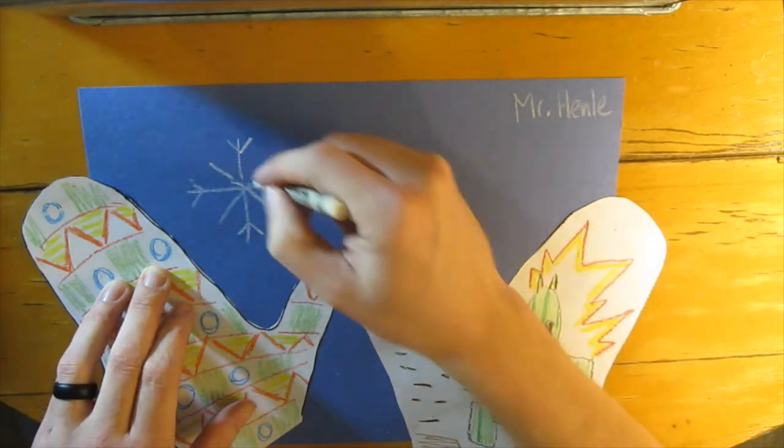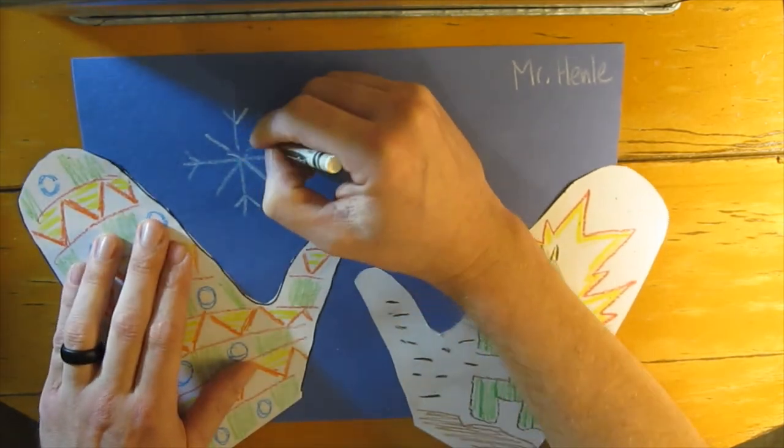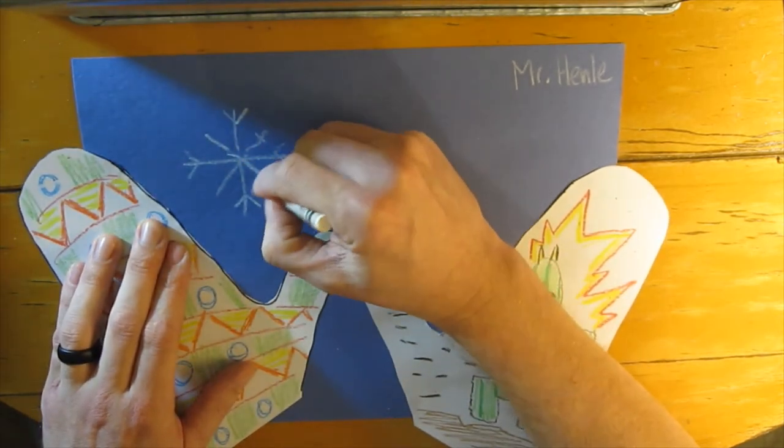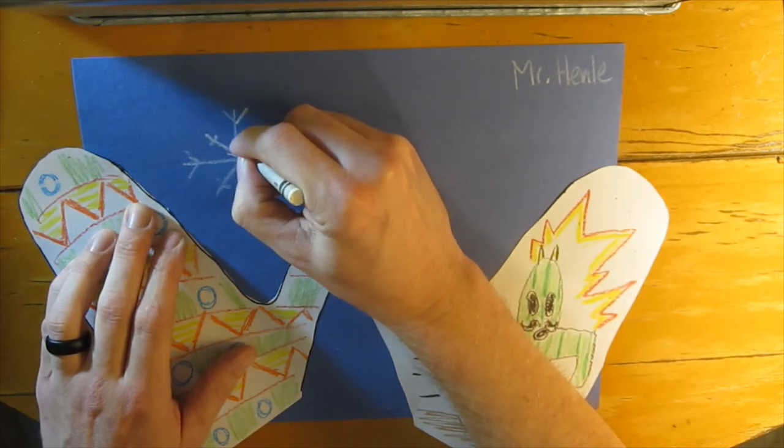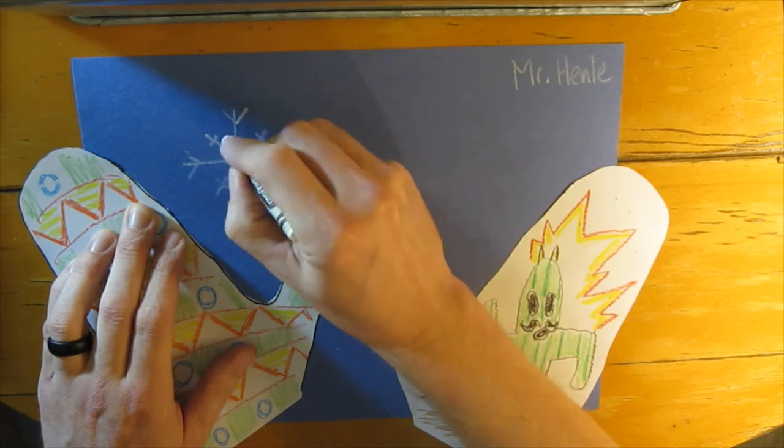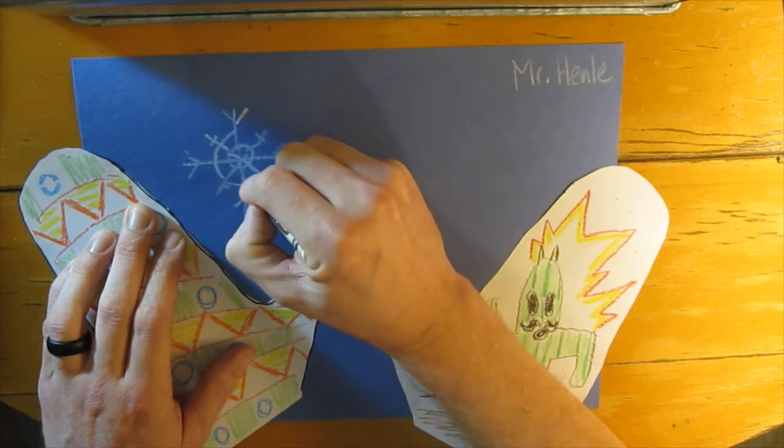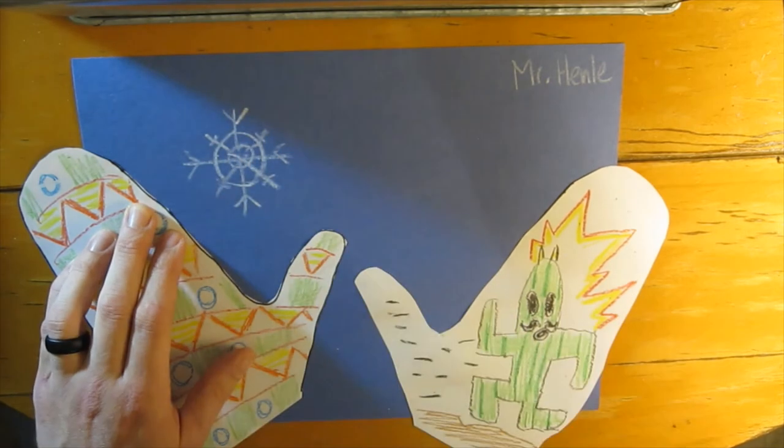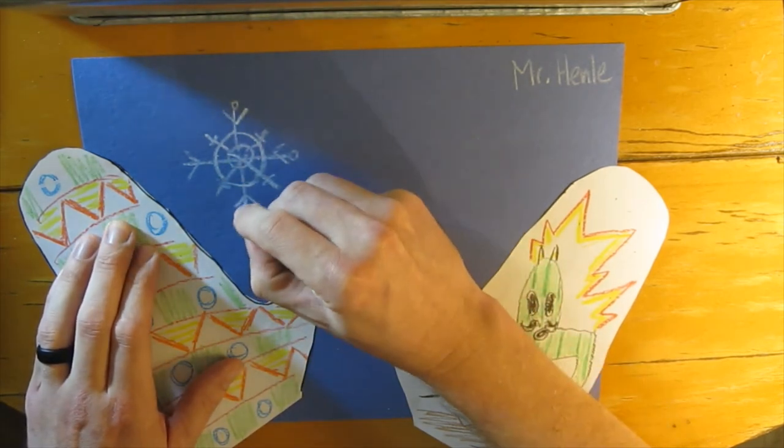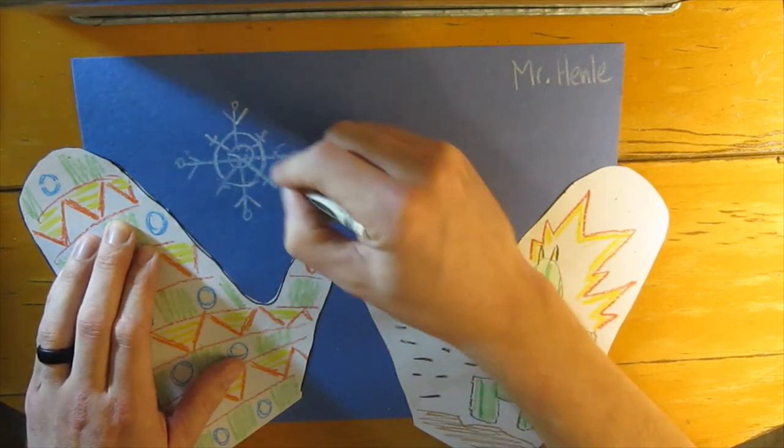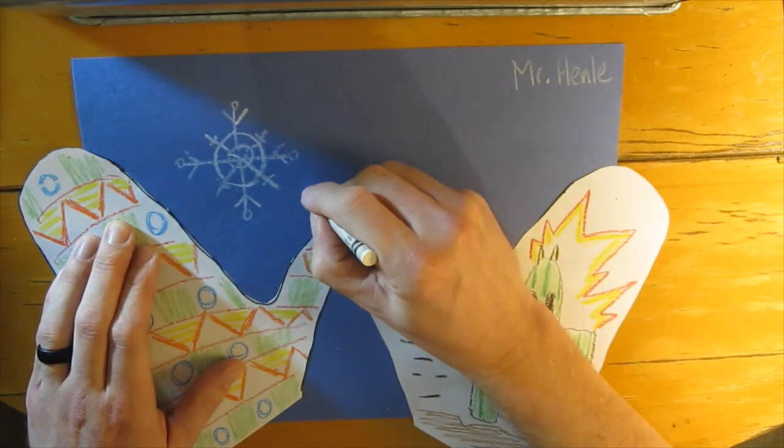You can add whatever shapes you want to it. I could do some lines on here, I could even put a circle in the middle or a bigger circle, and you can add things to the ends of them. Just make sure you do the same thing all the way around. You can make really tiny snowflakes.